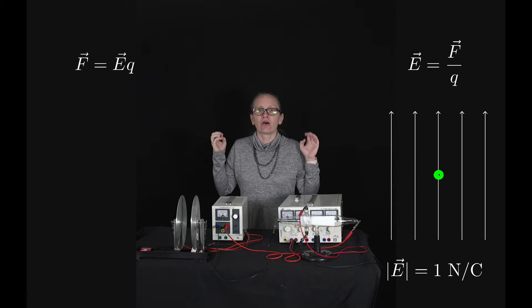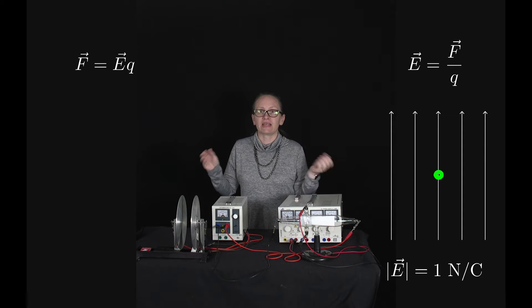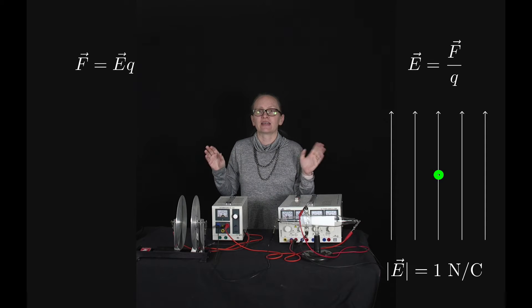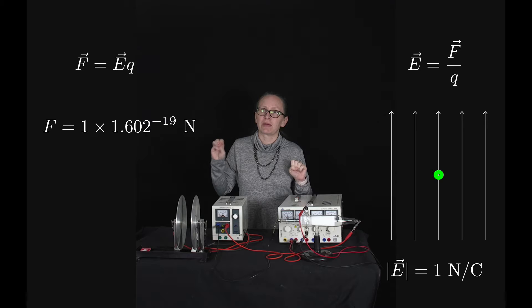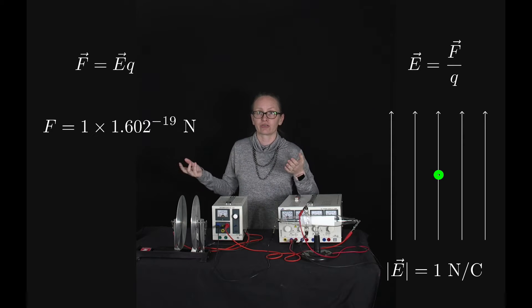So in that case the force felt by the electron will be given by E times Q. So that is equal to 1 times 1.602 times 10 to the minus 19 Coulombs as that's the charge on an electron.